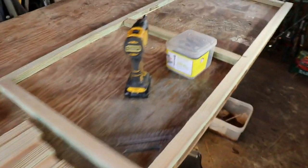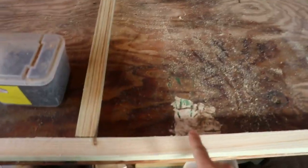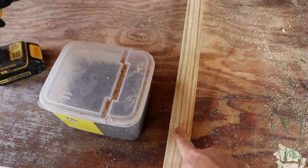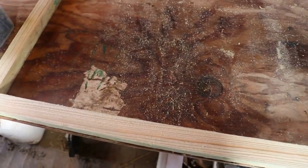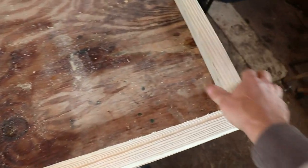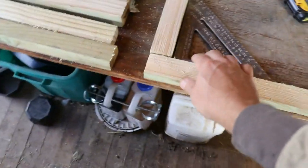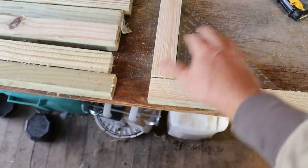What you need for that is two of your five-footers and then three of the 23-inch long ones. All you're going to do is line them up right here on the end, square it up. Now I use a T-square just to make sure your ends are square.